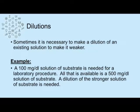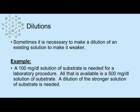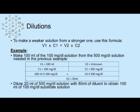It's also sometimes necessary to dilute a reagent or solution in the clinical lab to make it weaker. For example, we need a 100 milligrams per deciliter solution of a substrate for a laboratory procedure, but all we have available is a 500 milligrams per deciliter solution. To make that dilution, we use the formula V1C1 equals V2C2, which is used to make a stronger solution weaker.